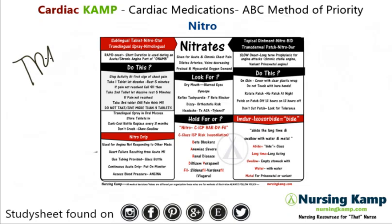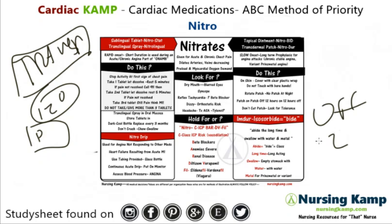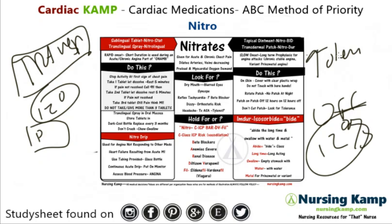Nitro also comes transdermal as a patch or a paste. The patch is on for 12 hours and then off for 12 hours. This is important because of tolerance — the body gets used to it and it stops working. So we put it on for 12 hours and take it off for 12 hours, alternating.